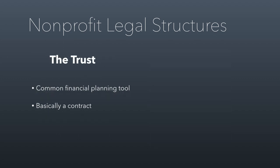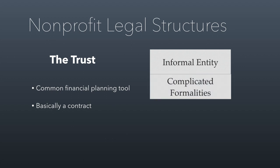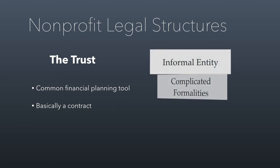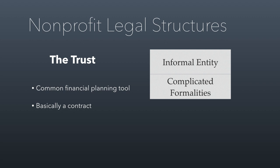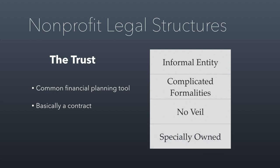Trusts are great for financial planning — essentially a contract between a settler and a trustee to help beneficiaries. Trusts are informal entities in the sense that the trust itself doesn't own anything; it's the trustee that owns things. There are still complicated formalities because of the way trusts are taxed and how they exist under the law. There is no veil with a trust, meaning a trustee as the owner of the property can have their personal assets at risk.